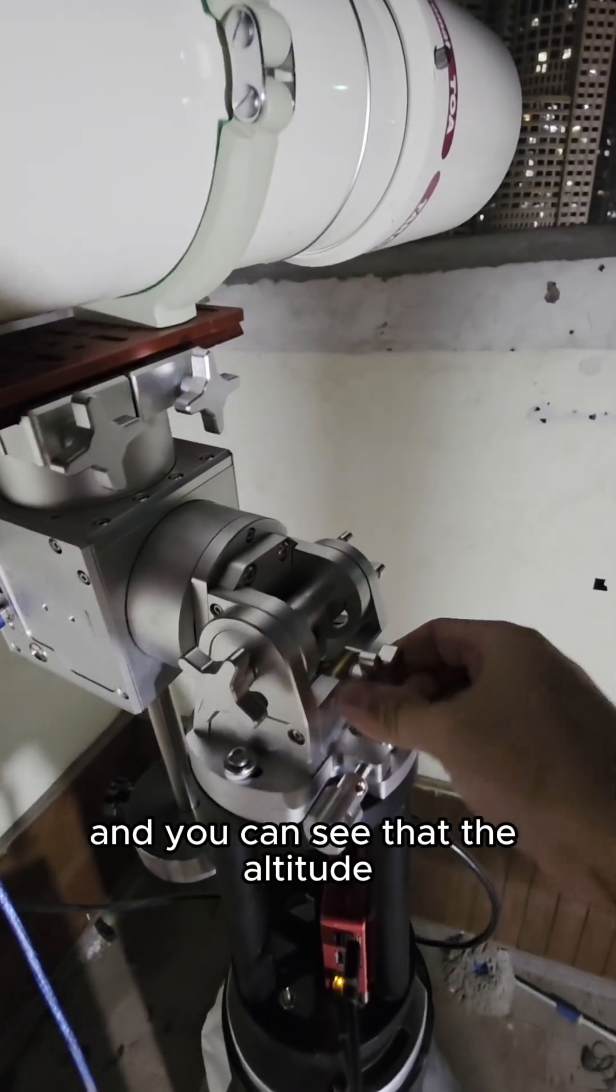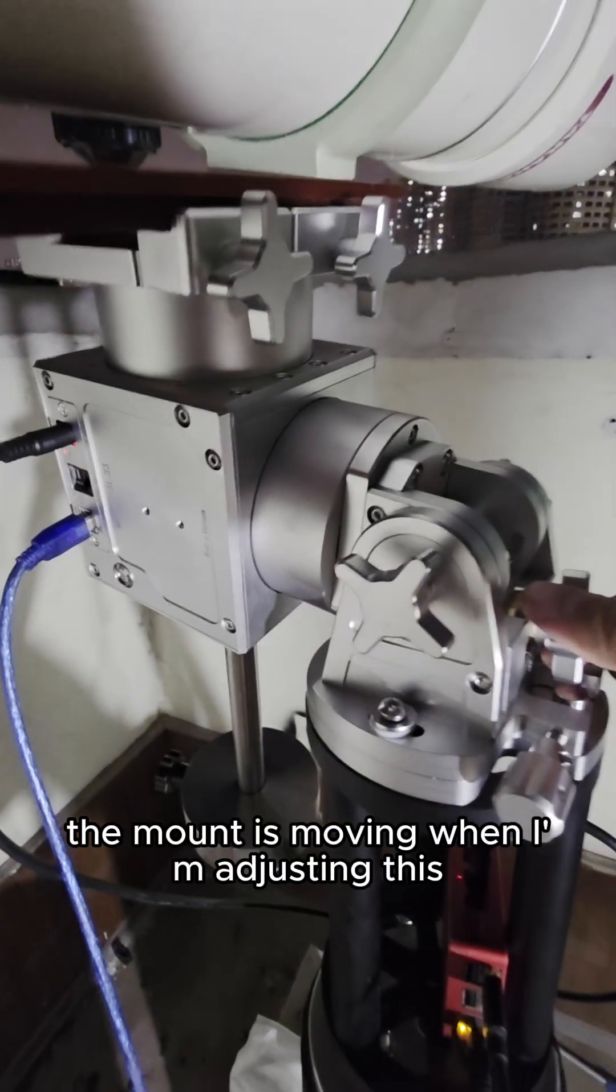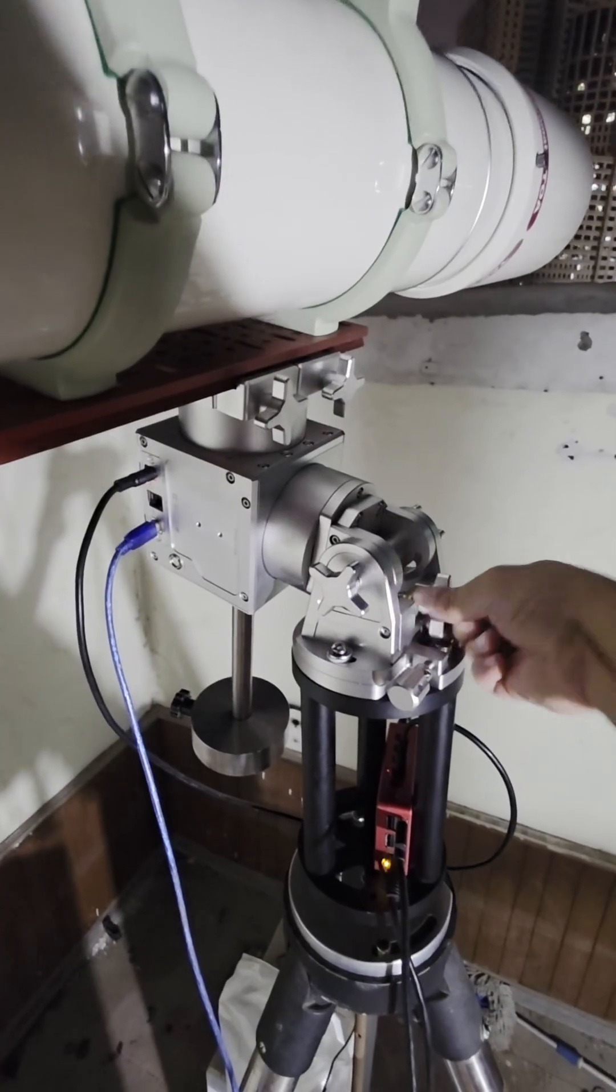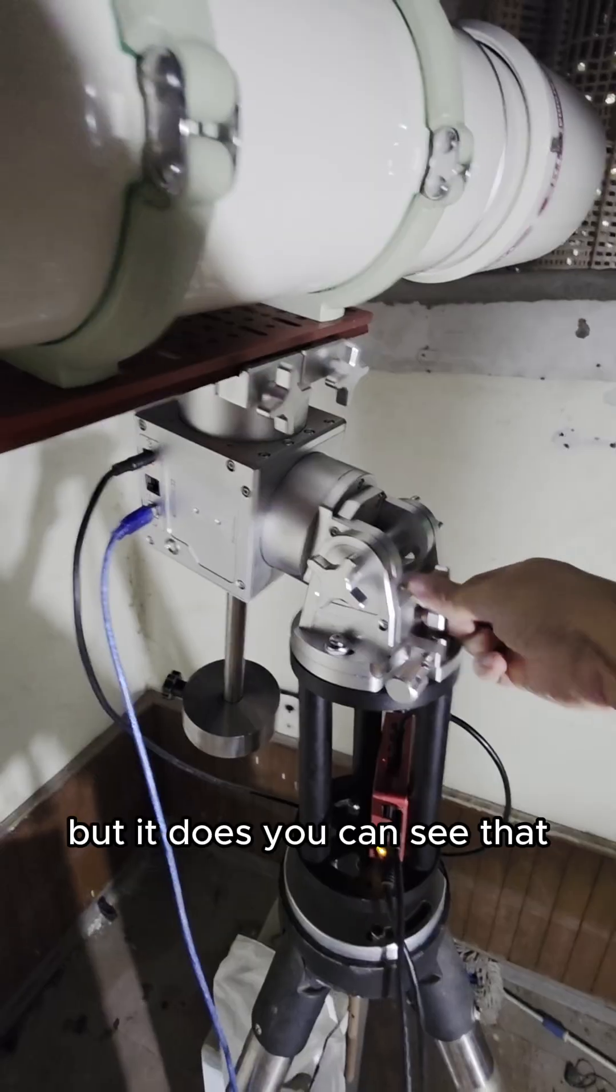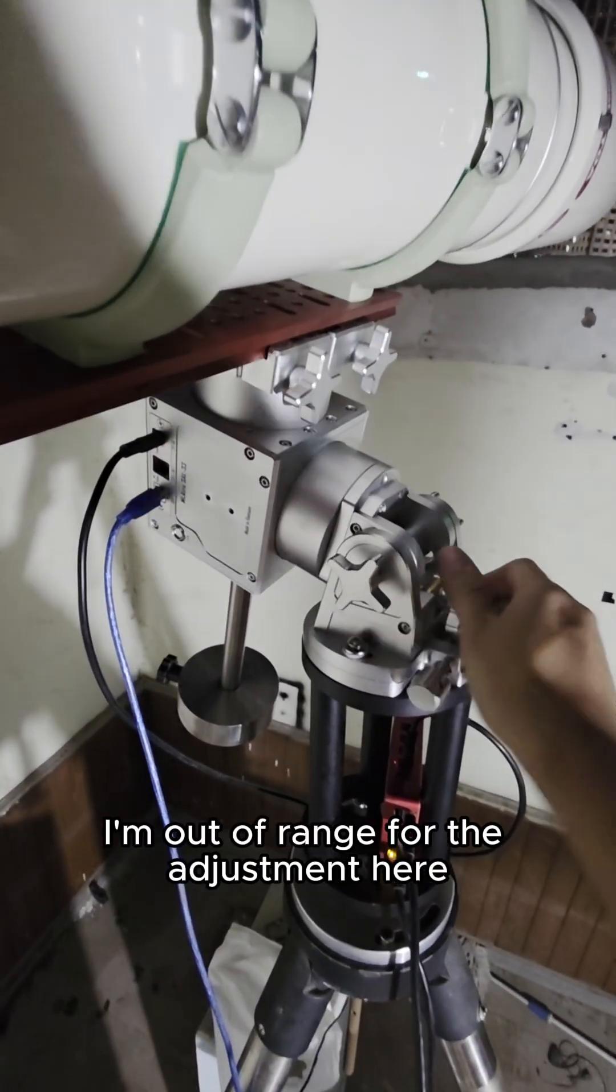And you can see that the altitude adjustment is very smooth. I don't know if you can see the mount is moving when I'm adjusting this. I hope you can see the mount moving, but it does. I'm out of range for the adjustment here.